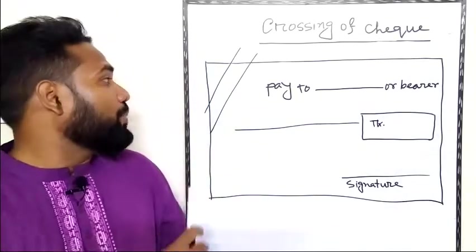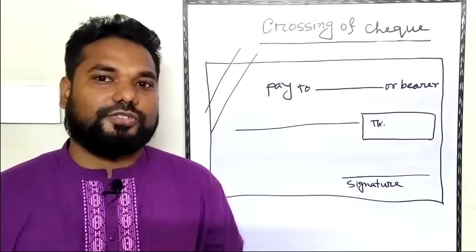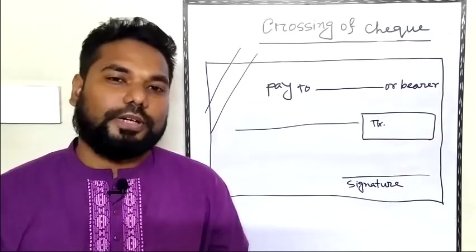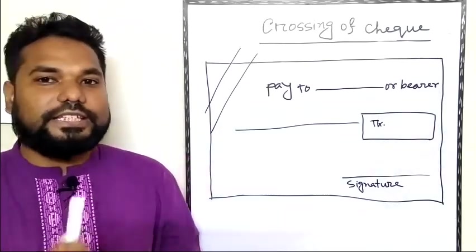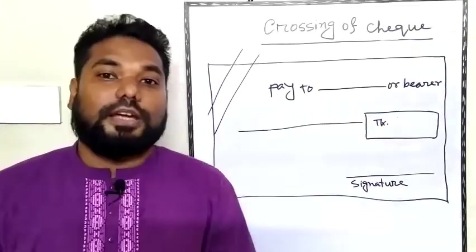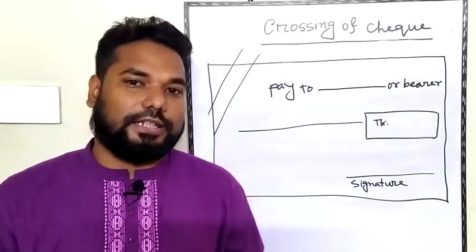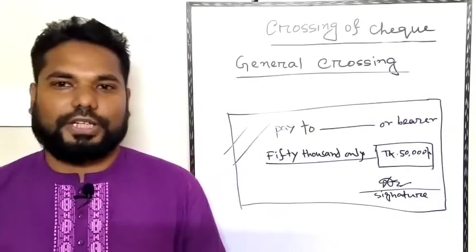When two parallel transverse lines are drawn across the face of the check, it is called a crossed check or a dark cut. This is the crossing of check, which is the crossed check.